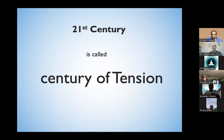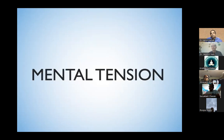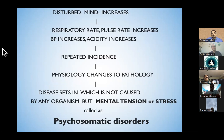Today's topic is the scientific approach to stress. Why do we have to discuss stress so much nowadays? The reason being that the 21st century is called the century of tension. This century of tension gives rise to mental tension, which causes a disturbed mind. Because of the disturbed mind, there is an increased respiratory rate, pulse rate increases, blood pressure increases, and acidity increases.